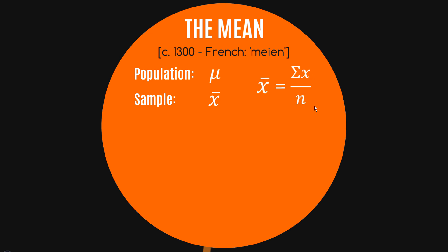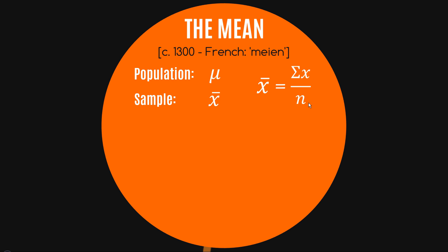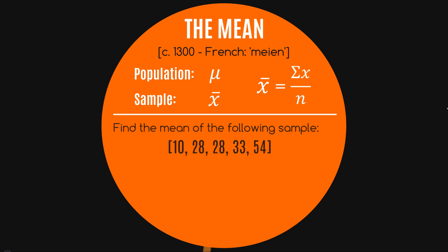If you're taking the mean from a sample, nothing much happens to that formula except we use a lowercase n to represent the number of observations instead of the uppercase N for the population. We're not going to get too bogged down into populations versus samples in this video, but if your curiosity gets the better of you, I'll put up a link here for a video I did on that exact topic.